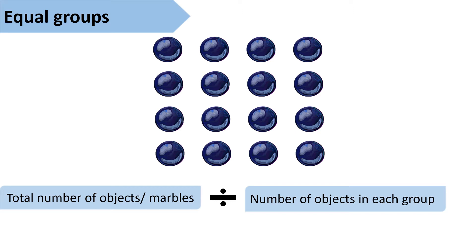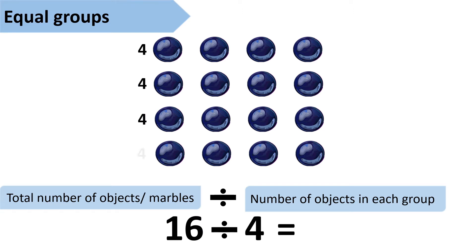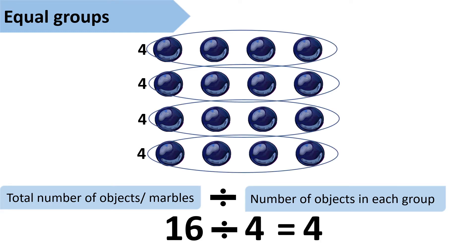So we have 16 marbles in all, and when I divide these marbles into groups of four, there are four marbles in each group. And I get to know that I have four groups of 16 marbles, so 16 divided by four equals four.